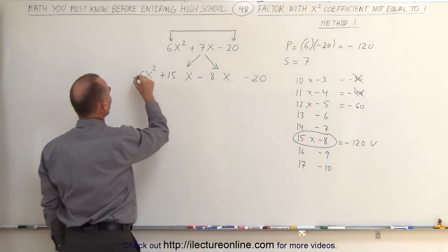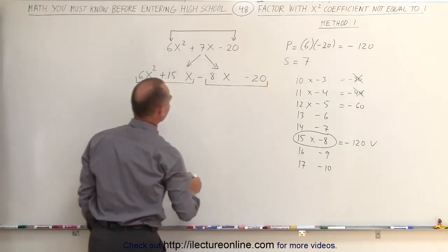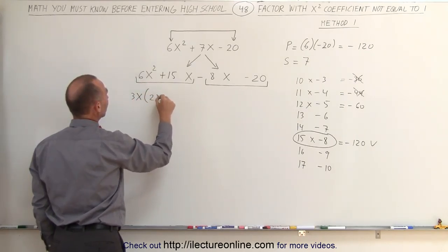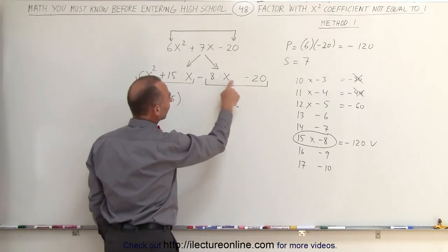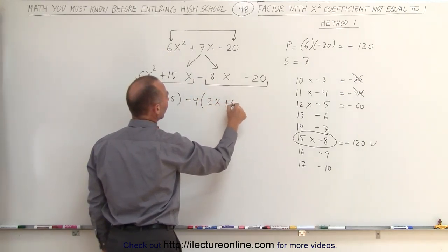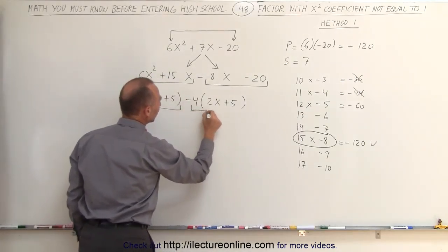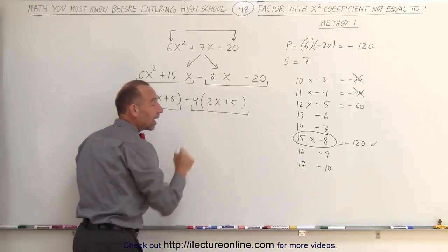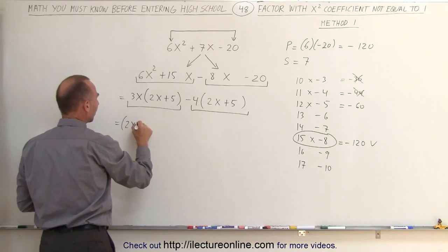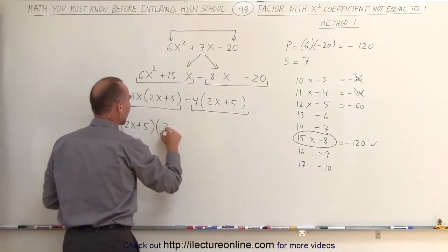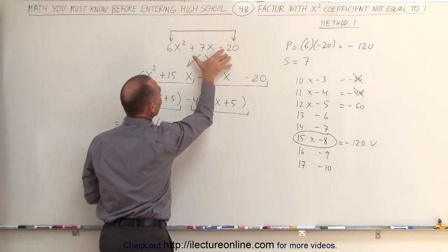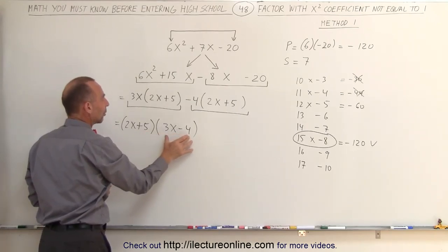Now you're going to use the grouping technique. Group the first two terms together and the last two together. On the first two, notice you can factor out a 3x. When I factor out 3x, I end up with 2x plus 5. And here, notice I can factor out a minus 4. When I do that, I also end up with 2x plus 5. Now I can see that 2x plus 5 is a common factor. Therefore, I can factor out 2x plus 5. What remains is 3x on the left and minus 4 on the right. So the original problem, 6x-squared plus 7x minus 20, can be factored into the quantity 2x plus 5 times the quantity 3x minus 4.